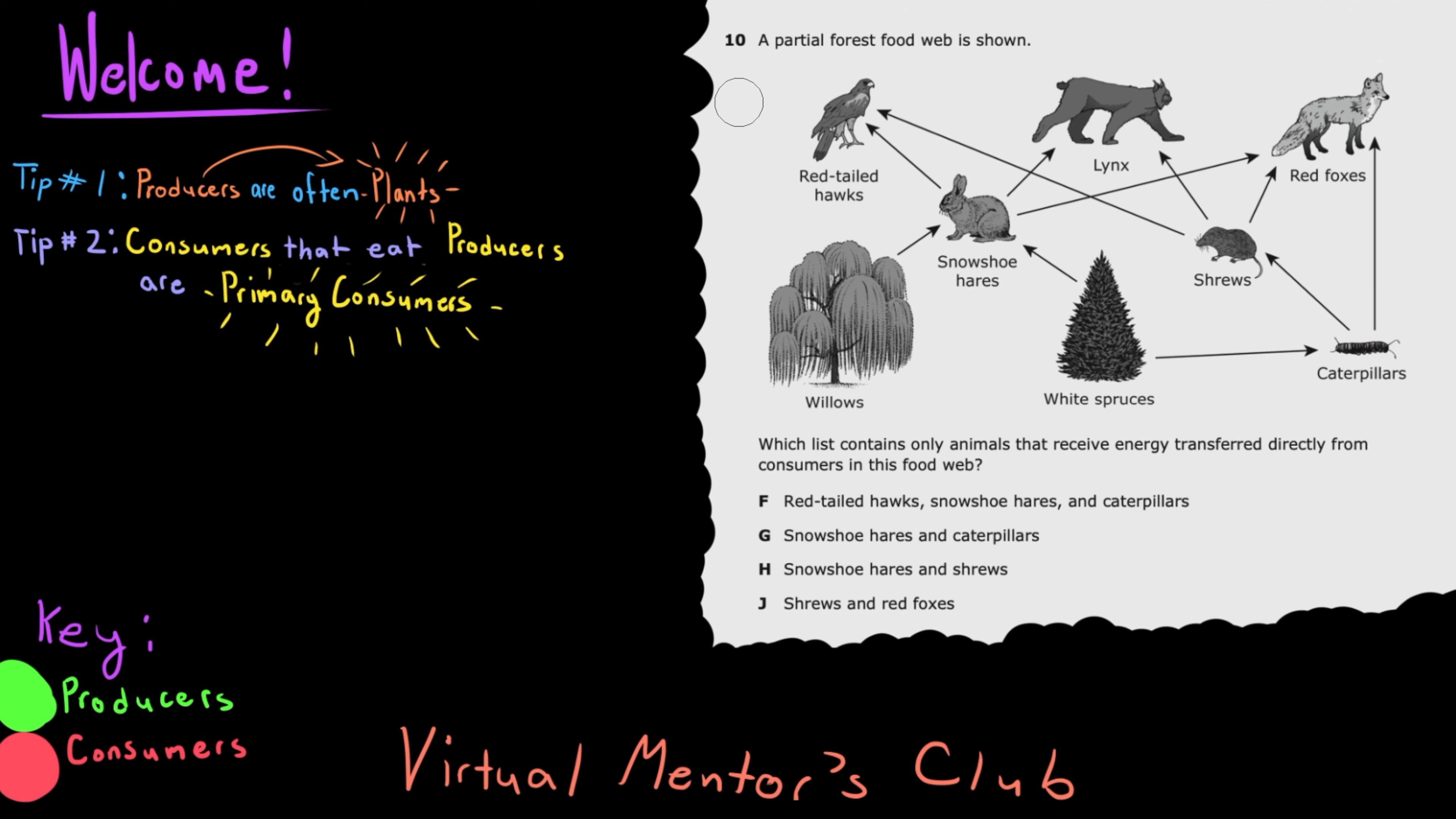As you can see, there are the producers, which I'll highlight in green, and in this case they are willows and spruces. And tip number one, producers are often plants.